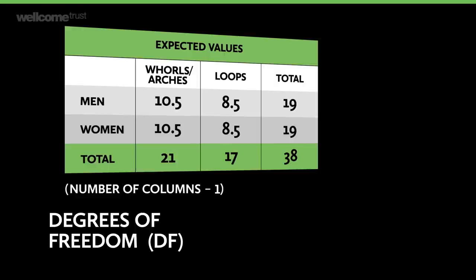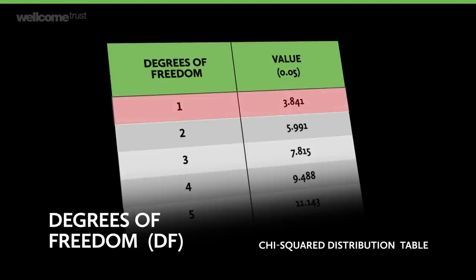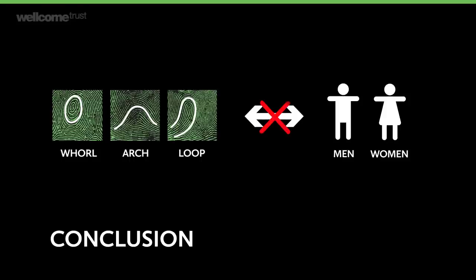We're not quite done though — we still need to see how the statistic stacks up, and for that we'll need a lookup table. This example has 1 degree of freedom: it's (columns − 1) × (rows − 1). We look up the chi-squared table with 1 degree of freedom and compare our statistic to the 0.95 value — that's 1 minus our significance level of 0.05. The critical value is 3.841. Our chi-squared statistic of 0.52 is smaller than this, so we do not have significant evidence against the null hypothesis at the 0.05 level. We conclude there is not enough evidence to support an association between fingerprint type and sex. Don't worry if you can't reject the null hypothesis — this often happens and it's all part of the statistical process.